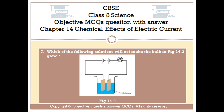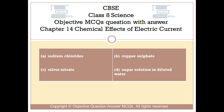Question number 7. Which of the following solutions will not make the bulb in figure 14.2 glow? Option A sodium chloride, Option B copper sulfate, Option C silver nitrate, Option D sugar solution in diluted water.